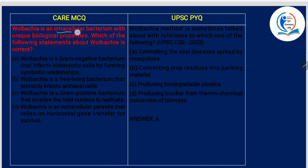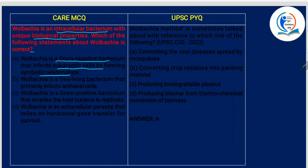MCQ: Wolbachia is an intracellular bacterium with unique biological properties. Which of the following statements about Wolbachia is correct? Wolbachia is a gram-negative bacterium that infects eukaryotic cells by forming symbiotic relationships. Gram-negative bacteria are aerobic bacteria that do not retain the crystal violet dye during gram-staining, so they appear pinkish in color under the microscope. Wolbachia infects eukaryotic cells by forming symbiotic relationships — yes. So A is the right answer.